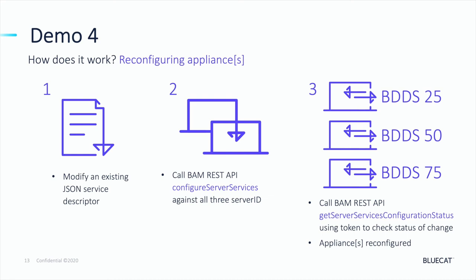Our final Demo 4 will cover changes to multiple appliances' services in a single API call — useful for fleet management going forwards. We'll be modifying a JSON service descriptor on the fly, making a single Configure Server Services call but this time entering the object IDs of our BDDS 2550 and BDDS75 appliances. We'll also be using the Get Server Services Configuration Status call to monitor the changes across all of these appliances.